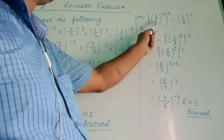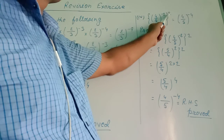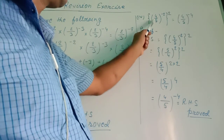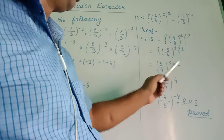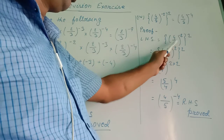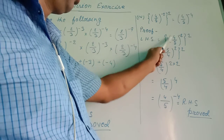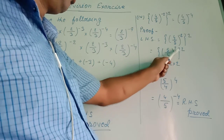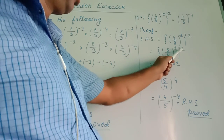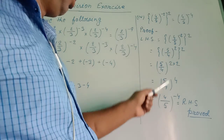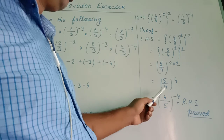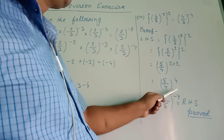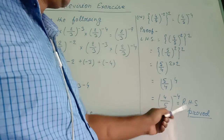Question number 4: prove that (4/5)^(-2) whole to the power 2 equals (4/5)^(-4). I wrote LHS: (4/5)^(-2) whole squared. I changed the negative index to a positive index by writing the reciprocal, which gives (5/4)^2 whole squared. Following the power of a power rule, 2 multiplied by 2 gives (5/4)^4. Writing the reciprocal gives (4/5)^(-4), which is the RHS — proved.